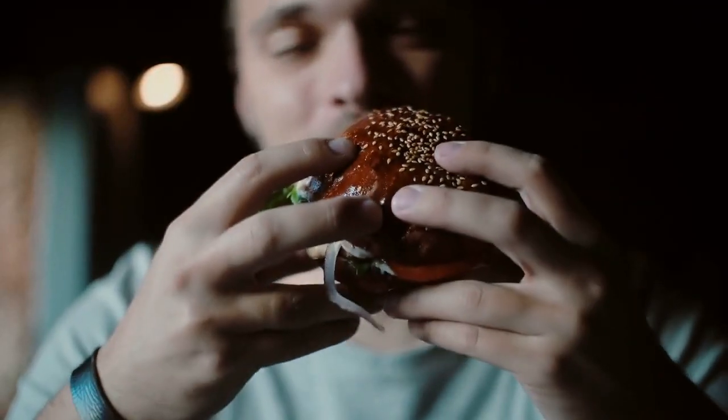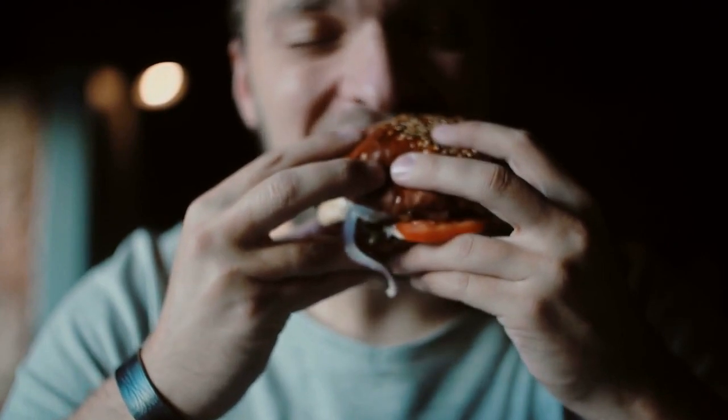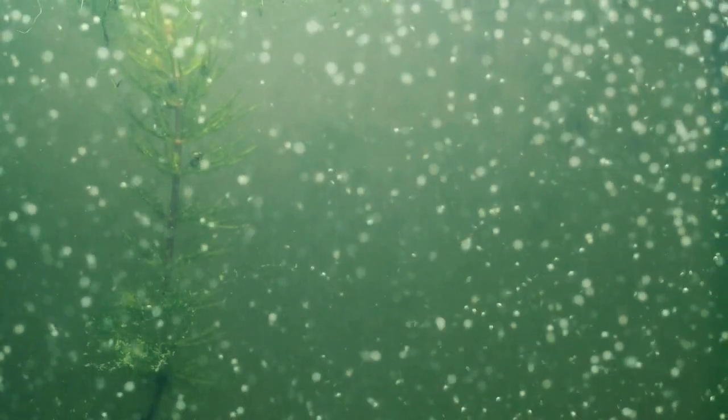Some marine animals have also developed unique adaptations for obtaining food. For example, some fish have sharp teeth and strong jaws for capturing and eating other fish, while others, such as whales and dolphins, have developed the ability to filter feed on small organisms, such as krill and plankton.